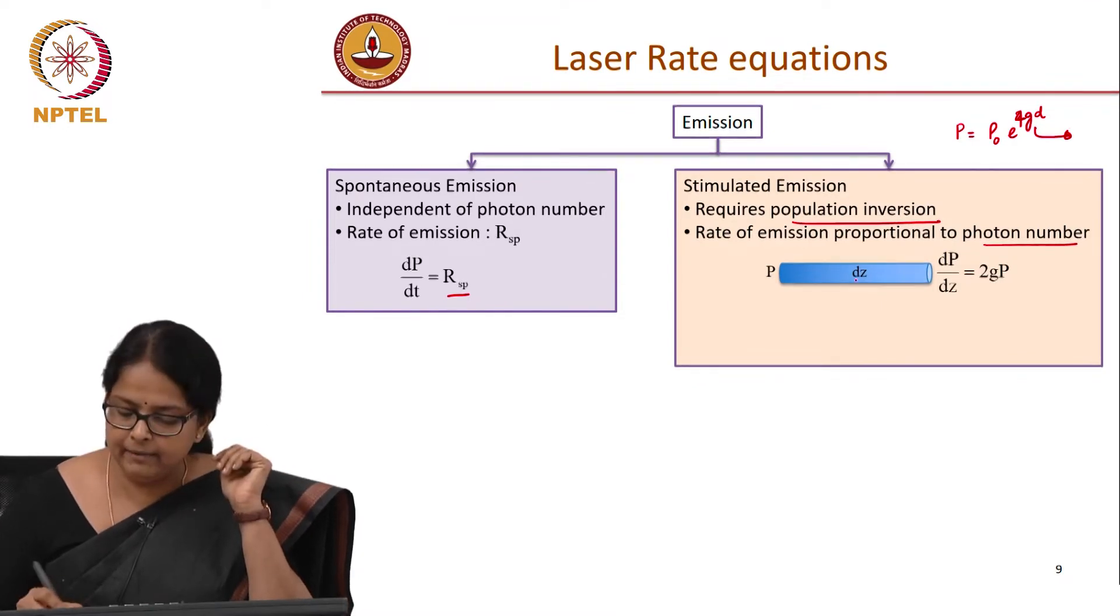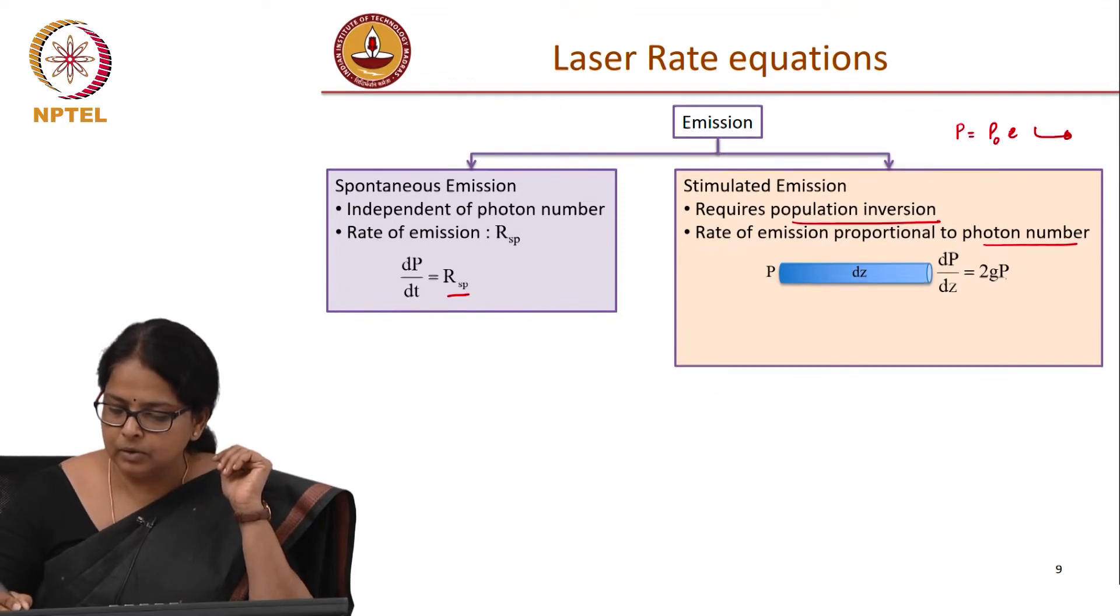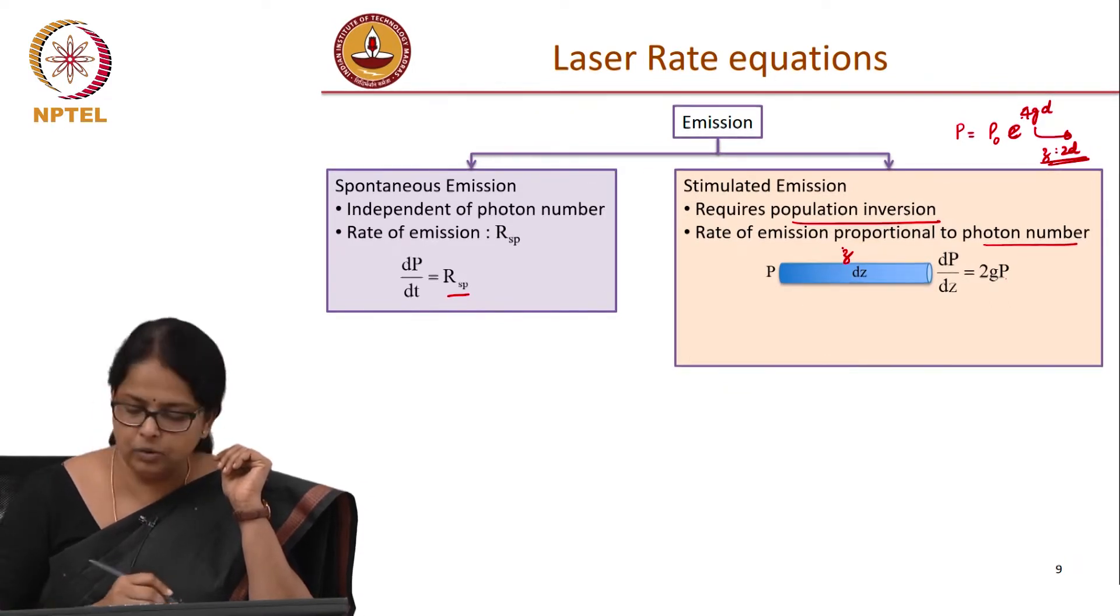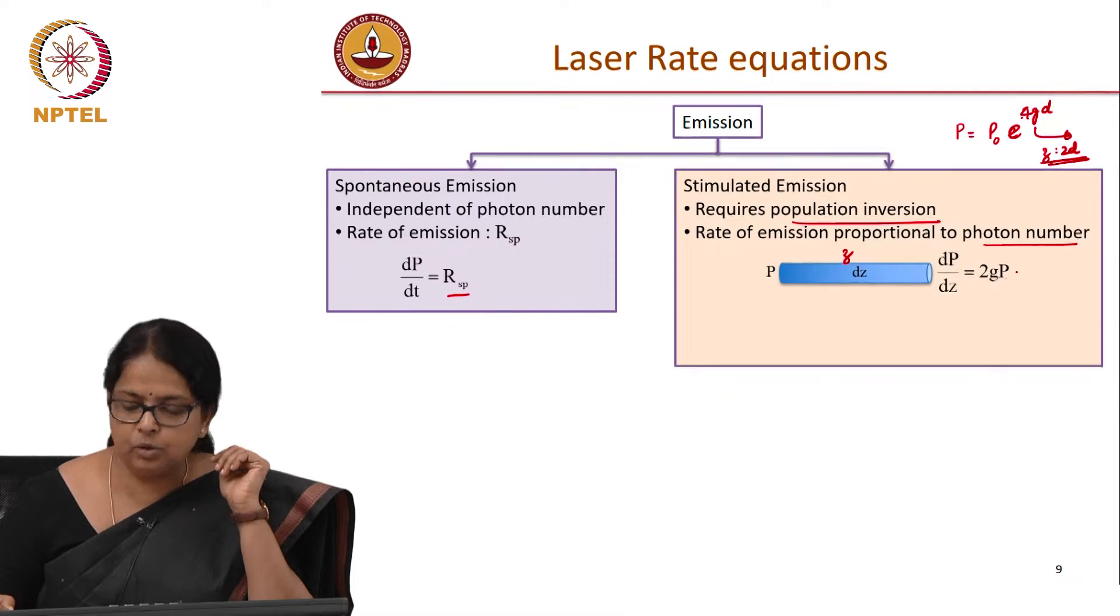Again, the same argument. If I have dZ propagation, P is my incident photon, this relation would tell me that dP by dZ is equal to 2gP. So P is equal to e power 4gd assuming that the z is 2d. But if I am just assuming a distance z propagating, I know that this is going to be 2gz. So the relation is actually dP by dZ is 2gP. That is a rate at which the photon number is increasing.